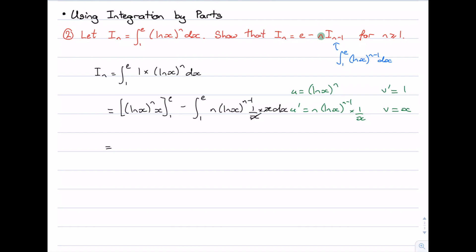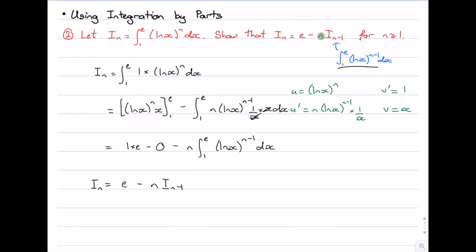Evaluating the boundary term: substituting e gives log(e) = 1, so 1^n · e = e; substituting 1 gives log(1) = 0, so that term is 0. The boundary term is therefore e. Then we subtract n times the integral from 1 to e of (log x)^{n-1} dx, with the x's having cancelled. That integral is exactly I_{n-1}, so we have I_n = e - n · I_{n-1}, and the recurrence relationship is proved.